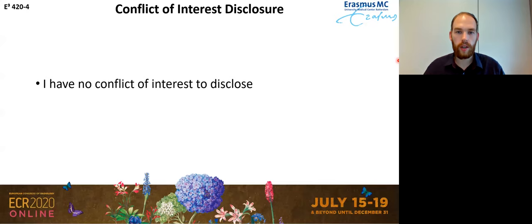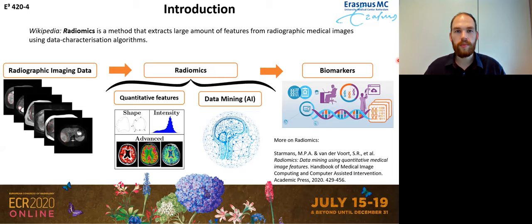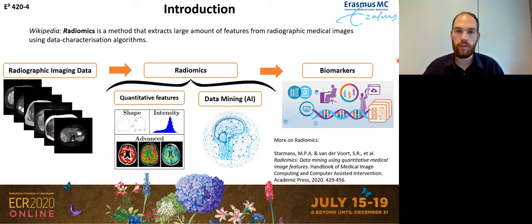I have no conflicts of interest to disclose. So in this session, we've already talked a lot about radiomics. Let me quickly recap what it's all about. In radiomics, we start with radiographic medical images and we extract quantitative features from these medical images. We use some form of data mining, for example, artificial intelligence methods, in order to find a pattern within these features. And that produces a so-called biomarker — something we might use in clinical practice to make predictions on these images.